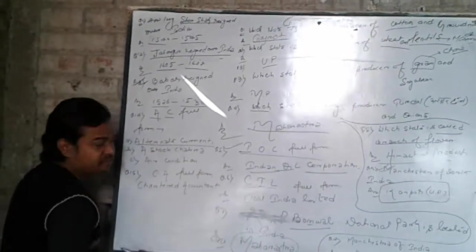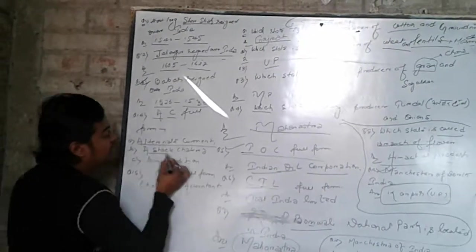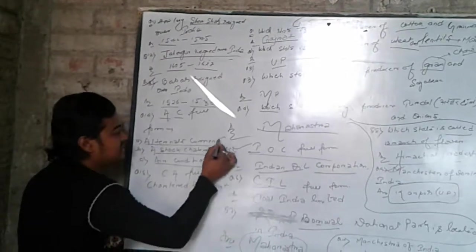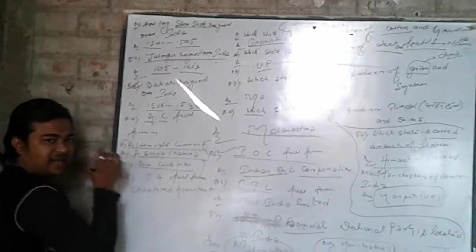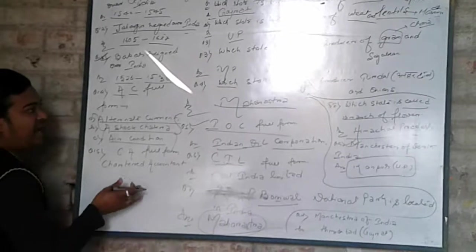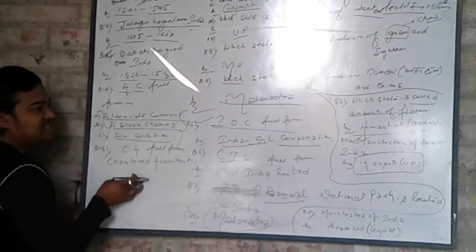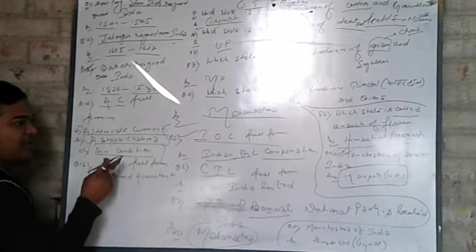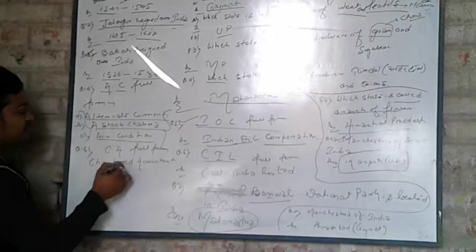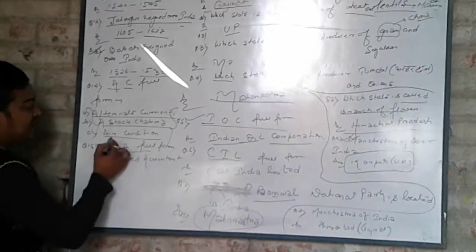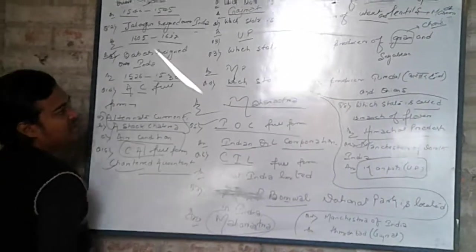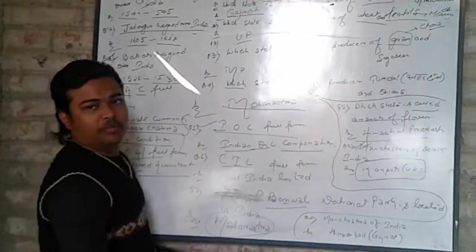Next question: What is the full form of AC? Alternate Current, Asthma Cycle, and Air Condition — AC has three full forms. And the last question, the 15th question: What is the full form of CA? Chartered Accountant. Okay friends.